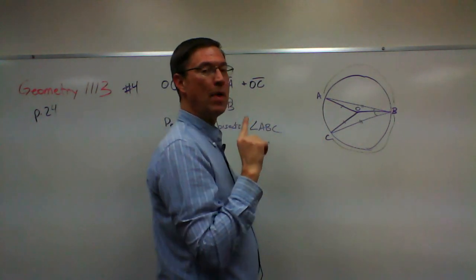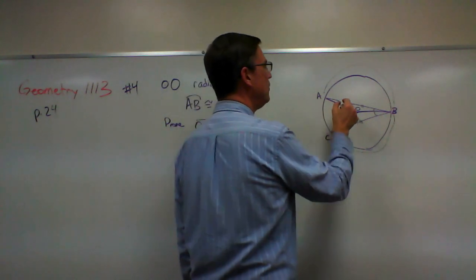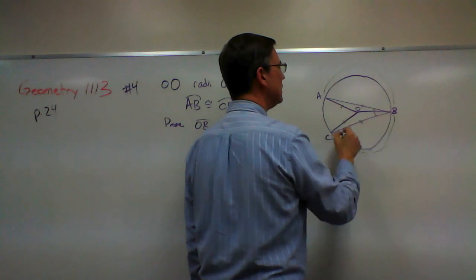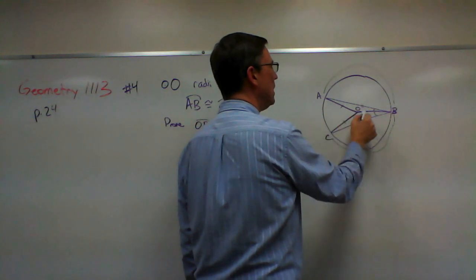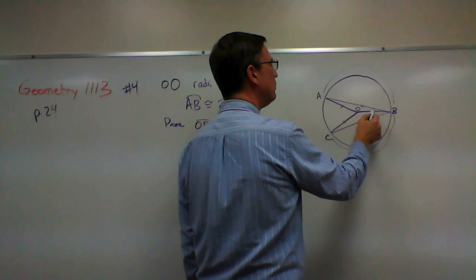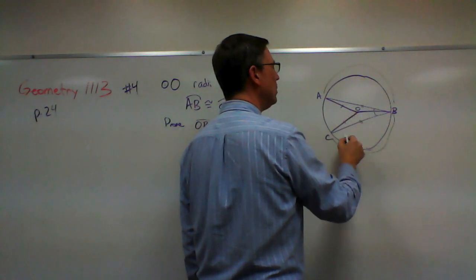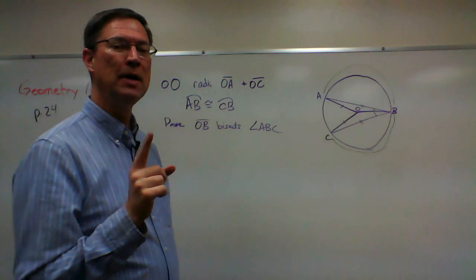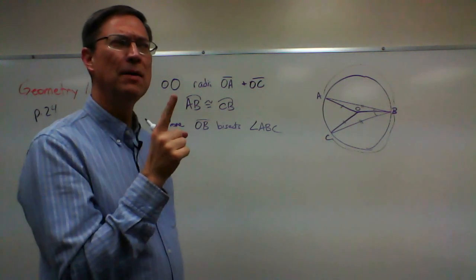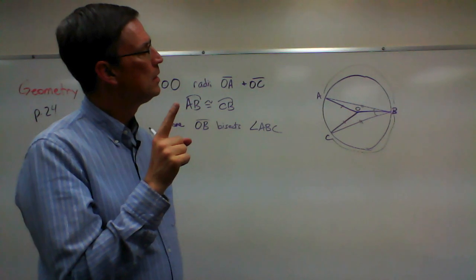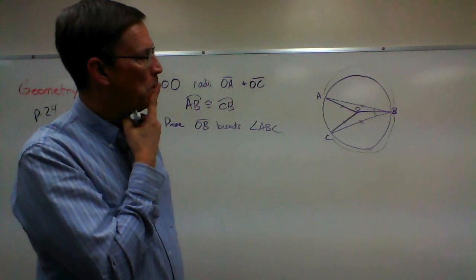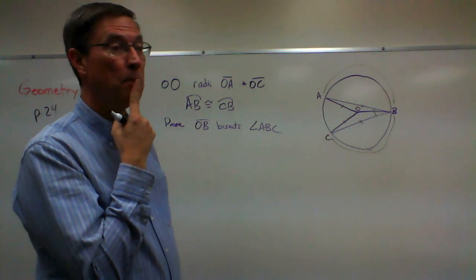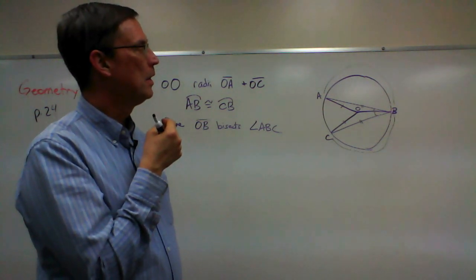I can prove that if I can prove that this triangle is congruent to this triangle. So we're pretty close to proving this triangle and this triangle are congruent. Do they have a side in common? I'm going to let you take it from there.